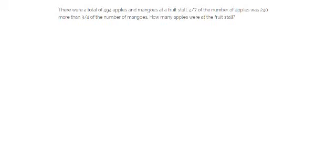There were a total of 494 apples and mangoes at a fruit store. 4 over 7 of the number of apples was 240 more than 3 quarters of the number of mangoes. How many apples were there at the fruit store? I'm going to draw a simple model for the apples and the mangoes.